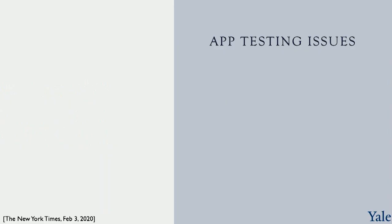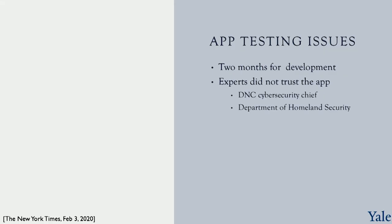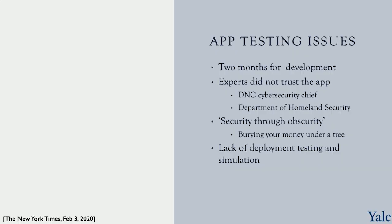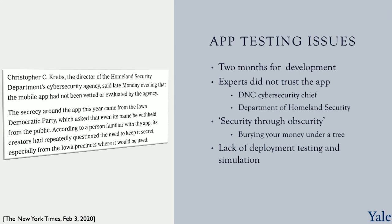Part of the reason why the app had so little testing is because they were only given two months for development, which is not a lot of time for an app of this scope. In fact, the Iowa Democratic Party had only spent around $63,000 on the app, when that figure really should have been more than double. Experts themselves did not trust the app, including the DNC cybersecurity chief and the Department of Homeland Security, who offered to get involved but were ignored. The app was an example of security through obscurity — kind of like burying your money under a tree — it wasn't really secure at all, just secret. This was confirmed by Christopher Krebs, director of the Homeland Security Department's cybersecurity agency, saying late Monday evening that the mobile app had not been vetted or evaluated by the agency.